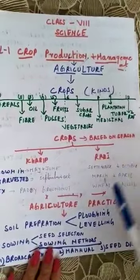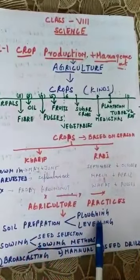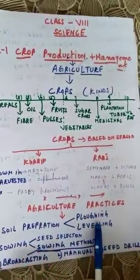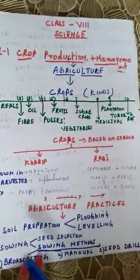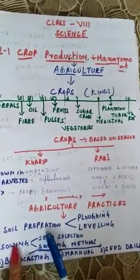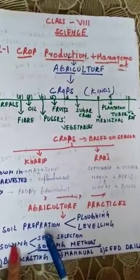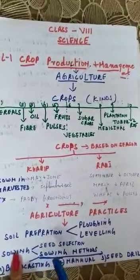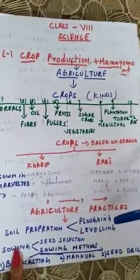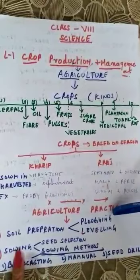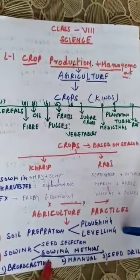A farmer has to perform certain agricultural practices before sowing the seeds. The first practice is soil preparation — the farmer has to prepare the field before sowing. In soil preparation, he has to plow the field, and after plowing, leveling is done with a seed leveler.